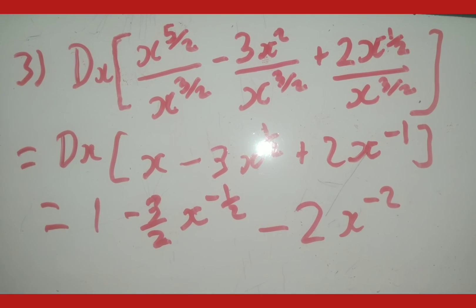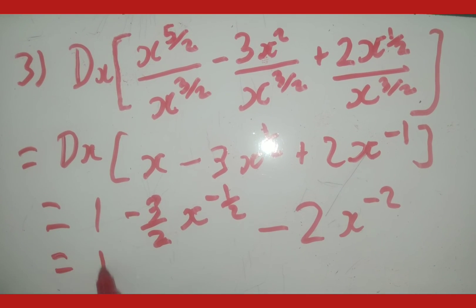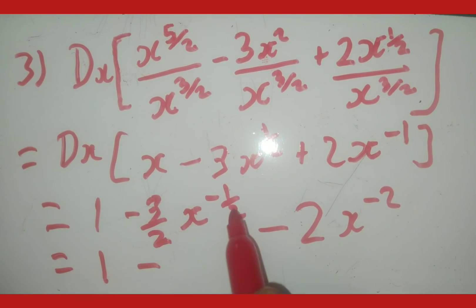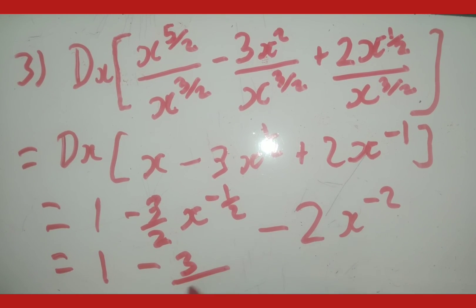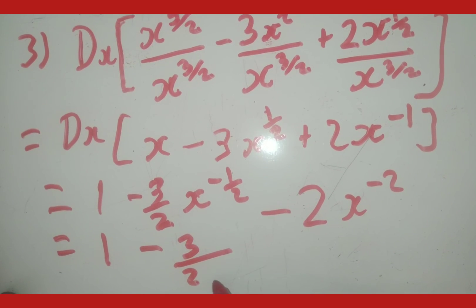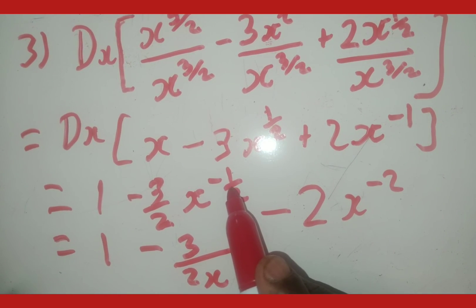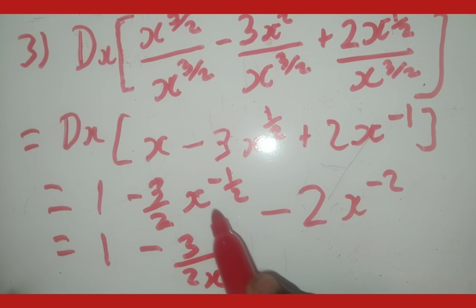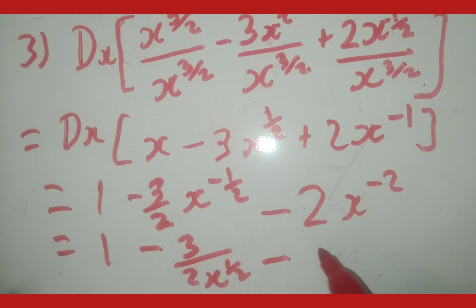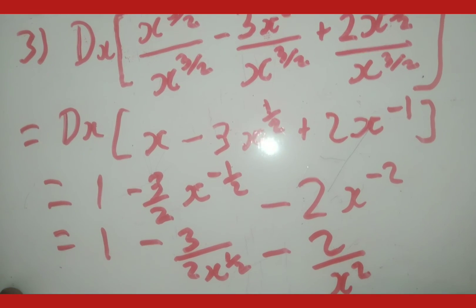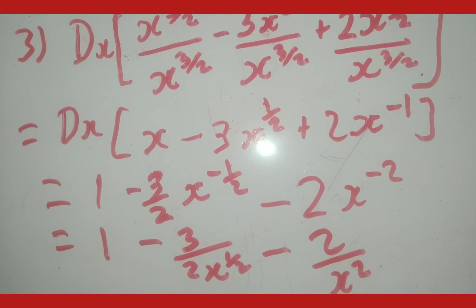If the answer requires positive exponents, we change the negative exponents by moving terms from the numerator to the denominator. When we change the sign of an exponent, whatever was the numerator becomes the denominator. So the negative exponent terms move to the denominator with positive exponents.